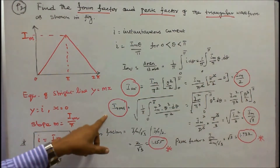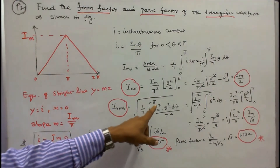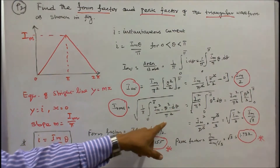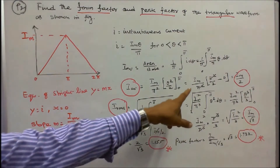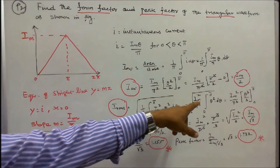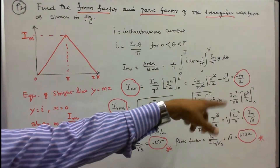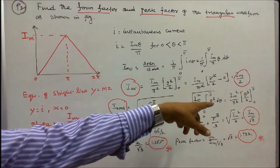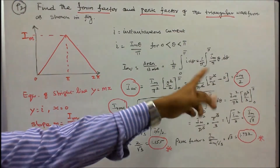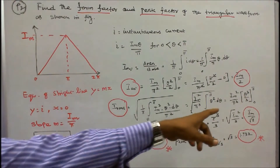Similarly, I_rms = sqrt[(1/pi) × integral from 0 to pi of (I_m² × θ² / pi²) dθ] = sqrt[(I_m² / pi³) × integral from 0 to pi of θ² dθ]. Since the integral of θ² is θ³/3, that equals sqrt[(I_m² / pi³) × (θ³/3)] from 0 to pi. Substituting the limits gives I_rms = I_m / √3.